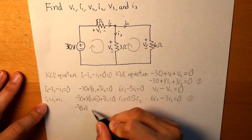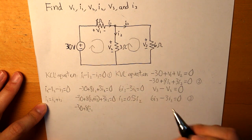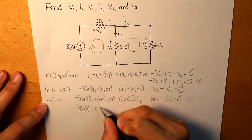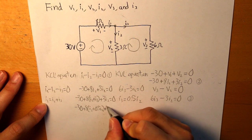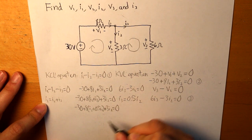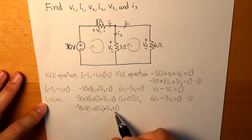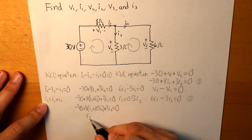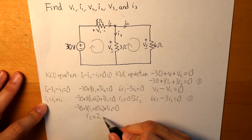So we have 8 and then plus 0.5I2 plus 3I2 is equal to 0. And then if we, now we can isolate and find what I2 is. And I2 is going to be 2A.